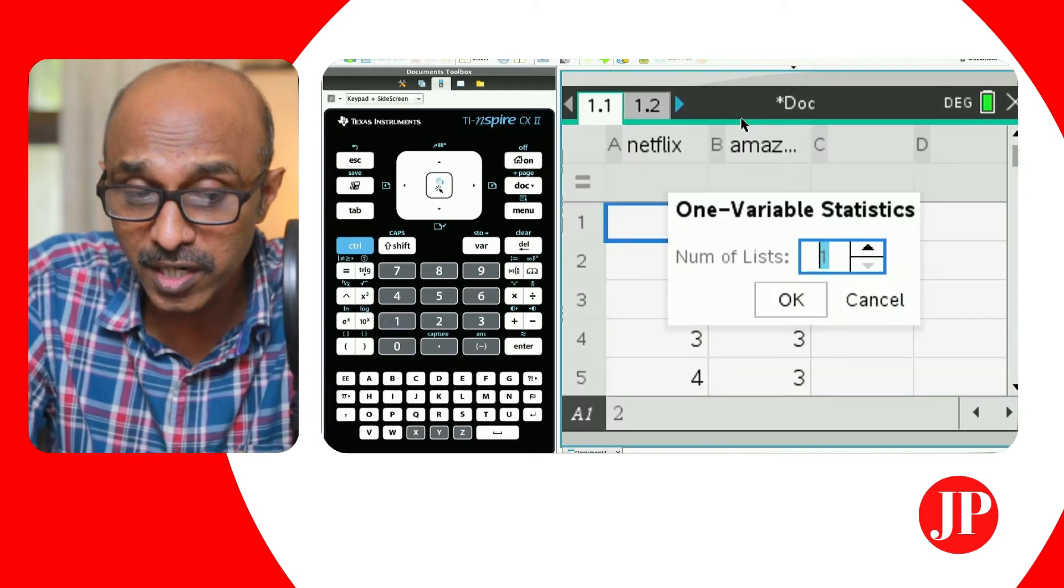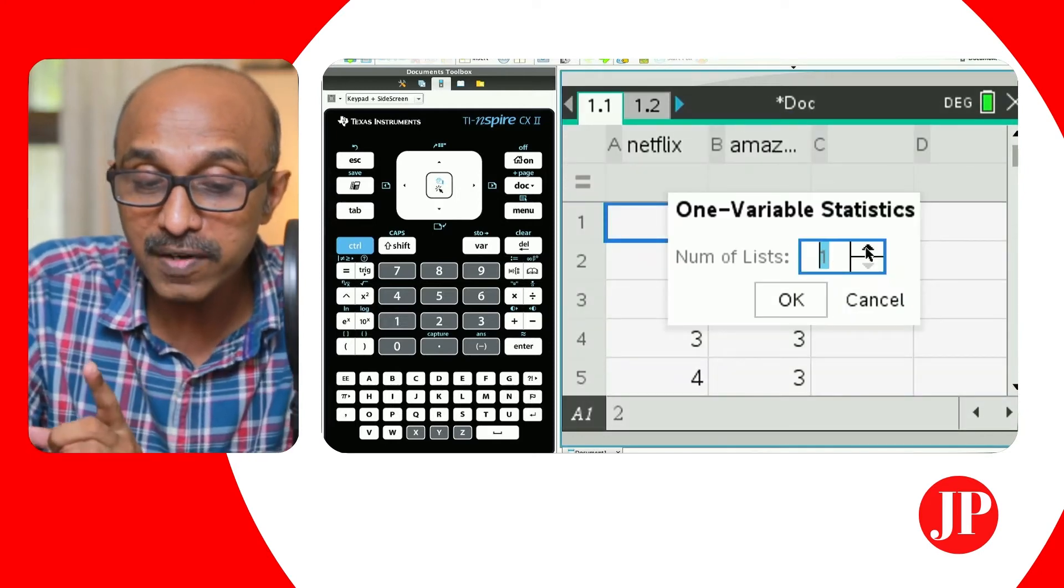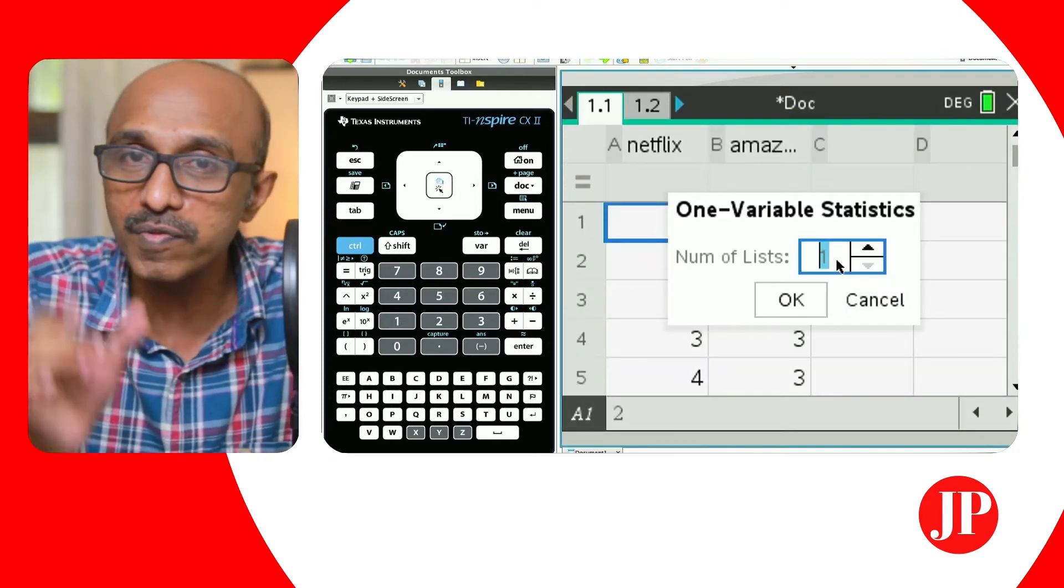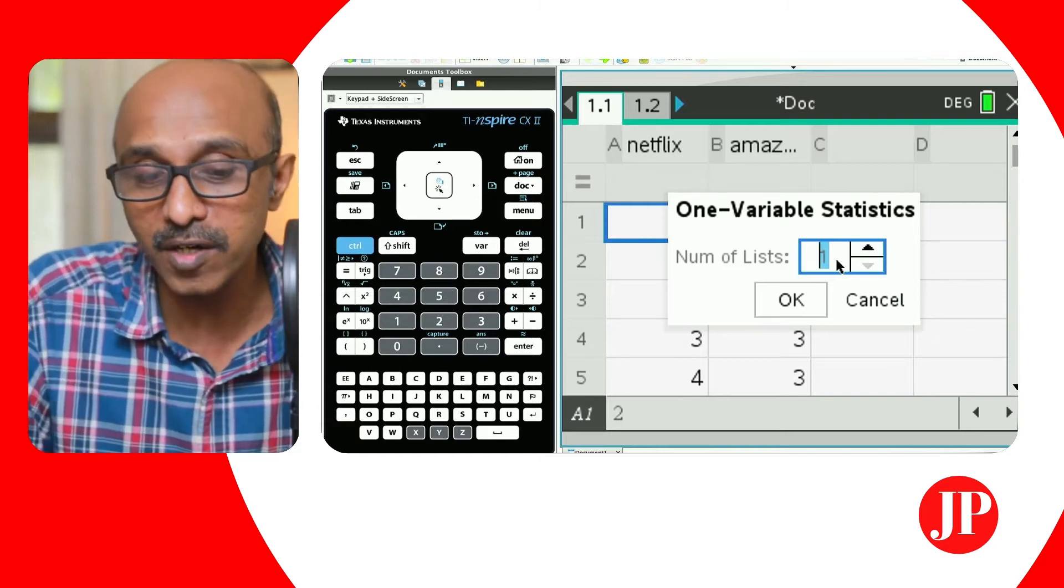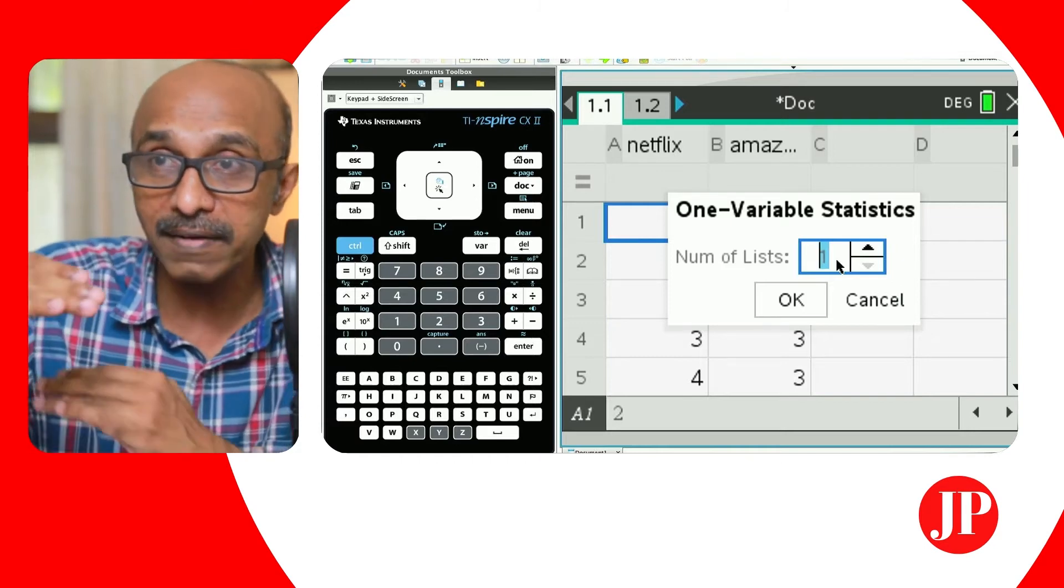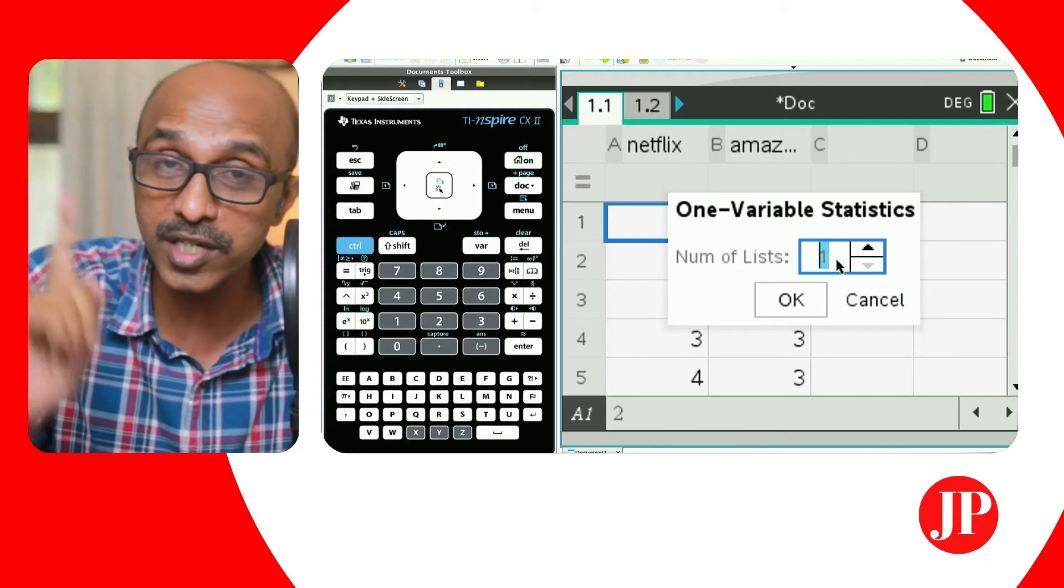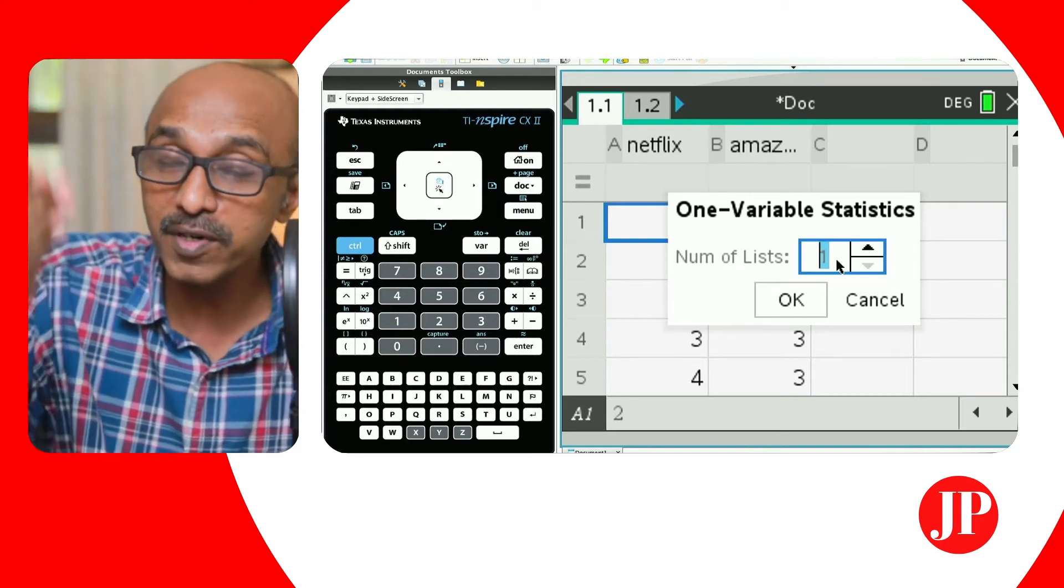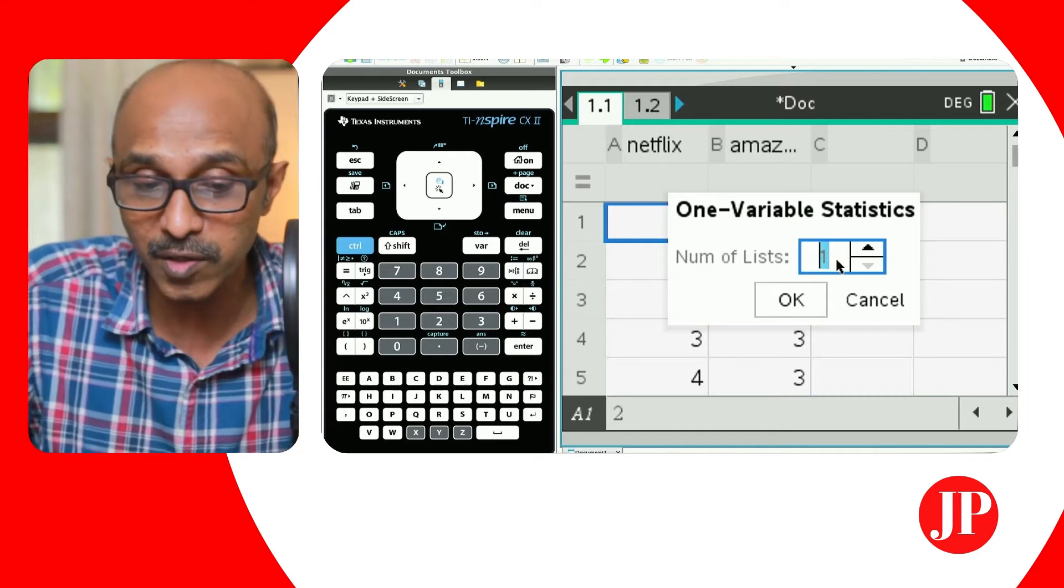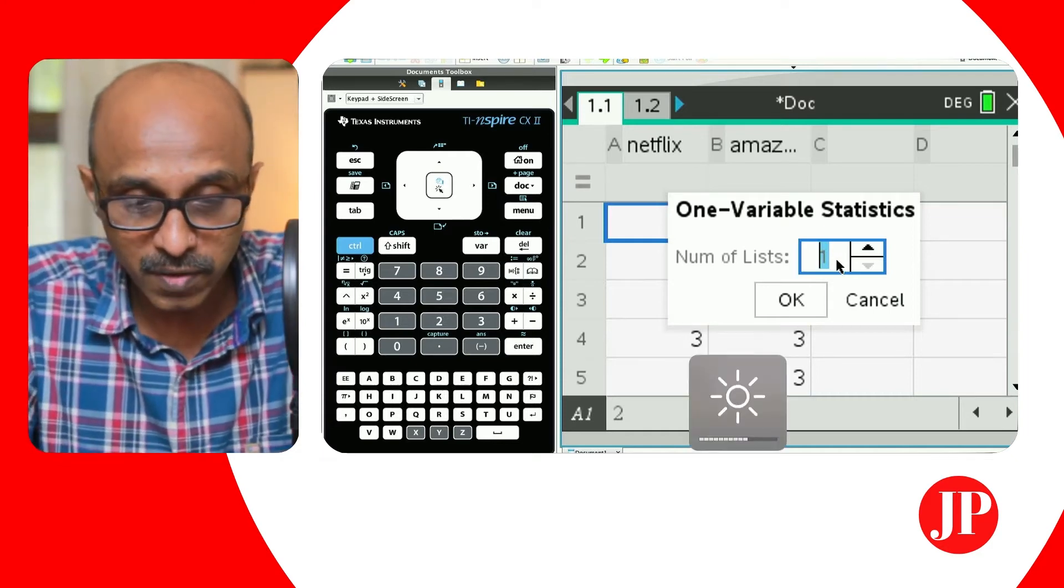This is, we've got two different sets of data and we are still running one variable statistics on those two different sets of data and then using that outcome to compare. Okay. So using one variable statistics. And this time, the number of lists that we have to enter is two because we've got two different sets of data. You could have had three different sets of data or maybe four different sets of data and had different box and whisker plots to compare those results.